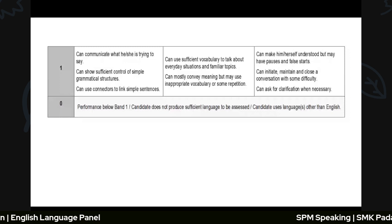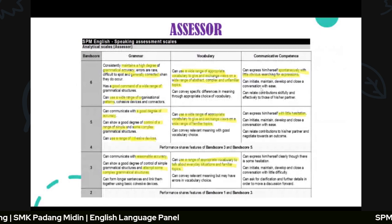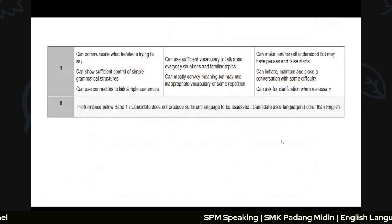The interlocutor gives six marks, while the assessor gives eighteen marks — six for grammar, six for vocabulary, and six for communicative competence — making a total of twenty-four marks. The interlocutor looks at your overall performance across Part One, Part Two, and Part Three.